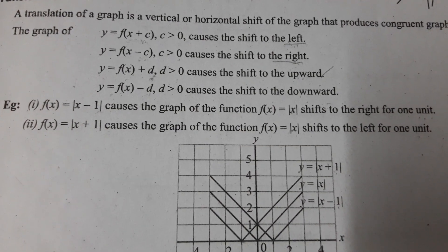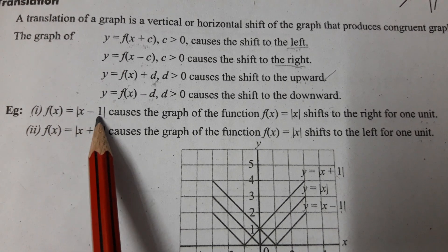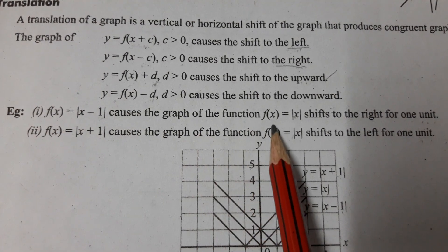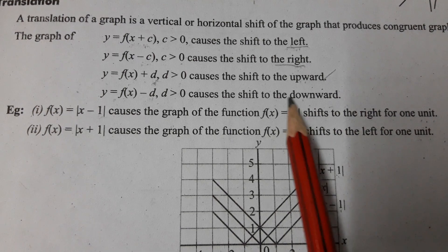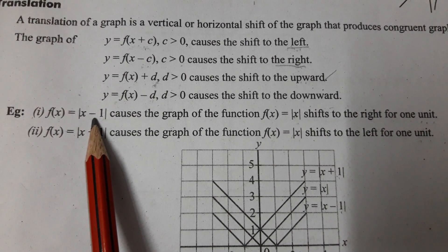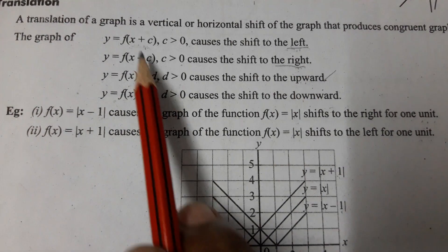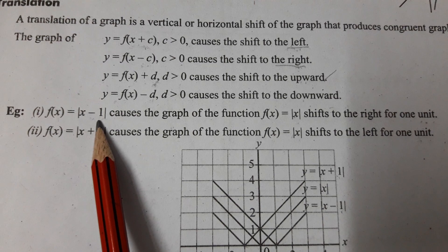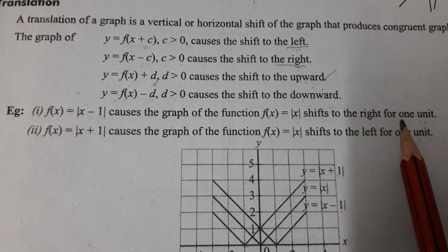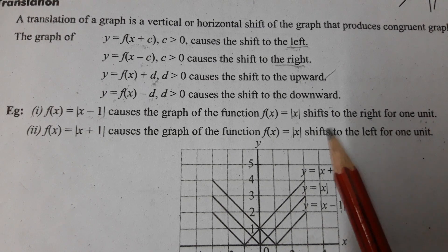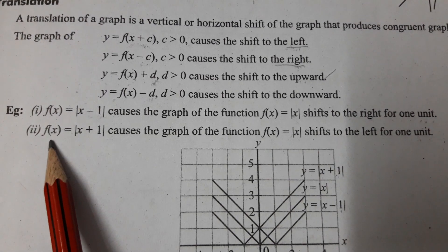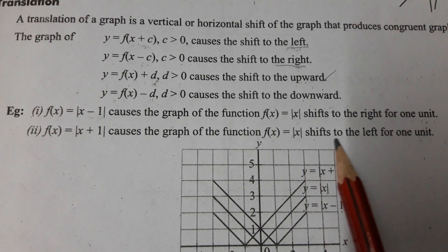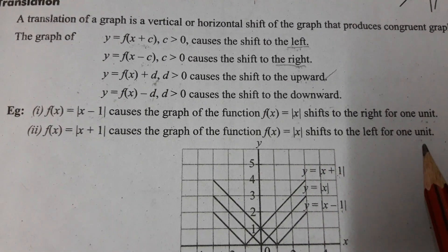Let's discuss a deeper example. f(x) = |x − 1| causes the graph of f(x) = |x| to shift to the right by 1 unit. And f(x) = |x + 1| causes the graph of f(x) = |x| to shift to the left by 1 unit. Plus in the argument means left side shift.